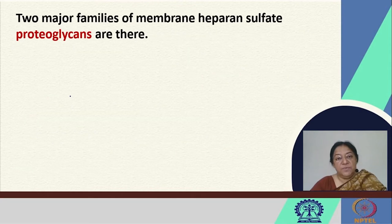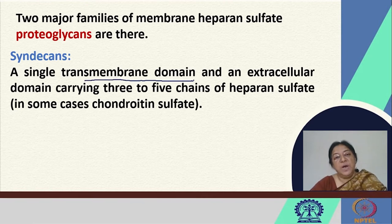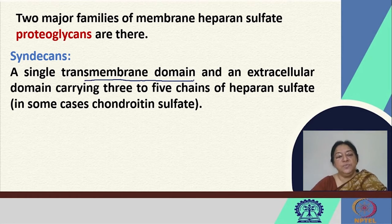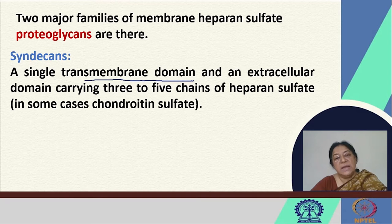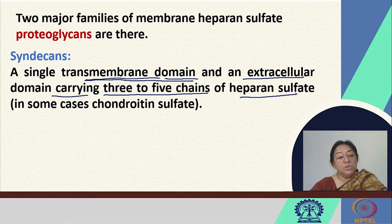There are two major families of membrane heparan sulfate proteoglycans. These are the syndicans, which have a single transmembrane domain. They were found to be based on carbohydrate linkers involved in several biological activities including cell-cell adhesion and signal transduction. The syndican has an extracellular domain that carries three to five chains of heparan sulfate, and in some cases this may also be chondroitin sulfate.